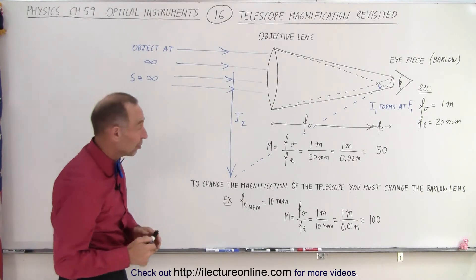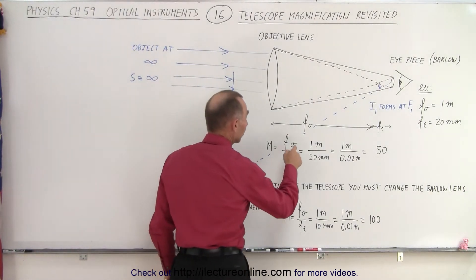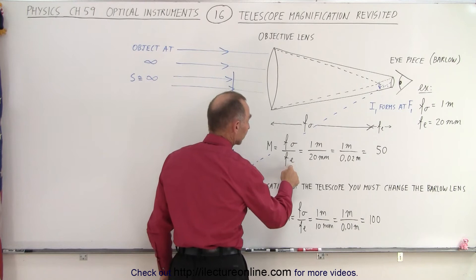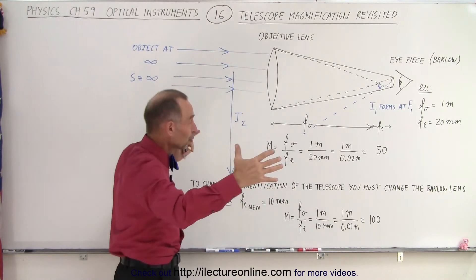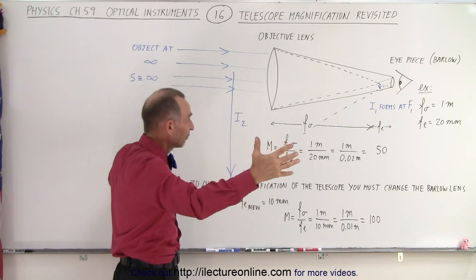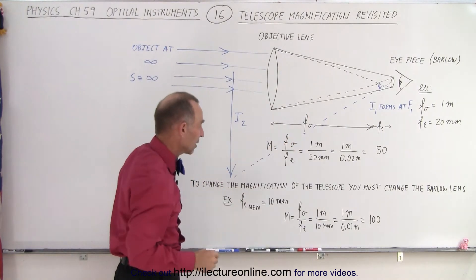The magnification of a telescope then becomes the focal length of the objective divided by the focal length of the eyepiece. That's why these big telescopes have these enormous long focal lengths for the objective to allow a larger magnification.